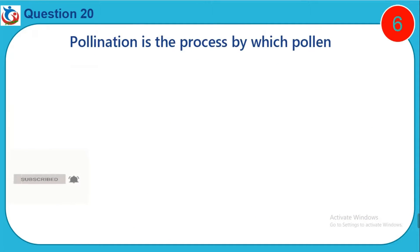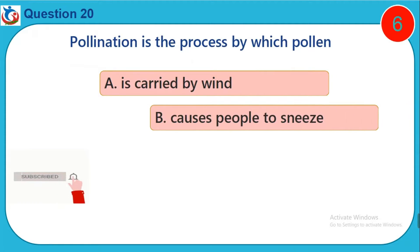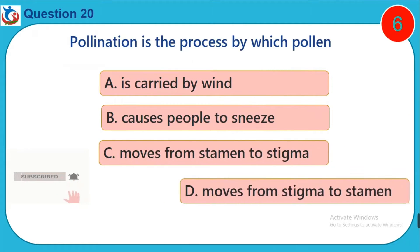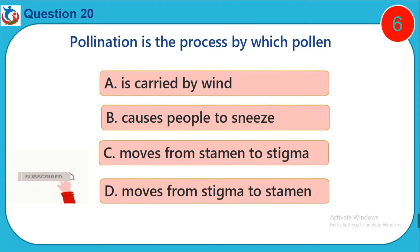Question 20. Pollination is the process by which pollen: A. is carried by wind. B. Causes people to sneeze. C. Moves from stamen to stigma. D. Moves from stigma to stamen.